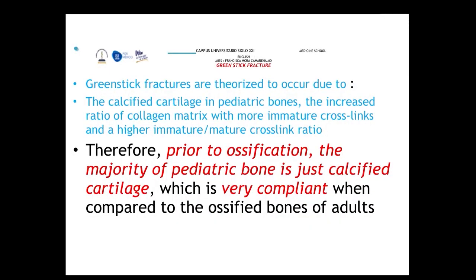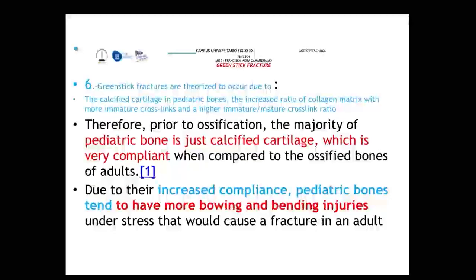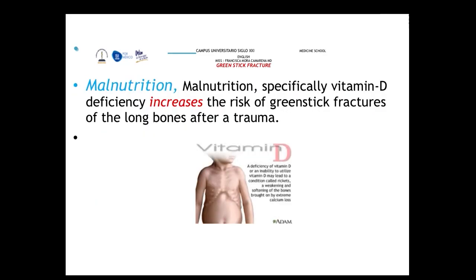Pediatric bones have a higher collagen matrix ratio and a higher immature-to-mature cross-link ratio. Before ossification, most pediatric bones are calcified cartilage, which is very compliant and flexible compared to the ossified bones of adults. Additionally, malnutrition — specifically vitamin D deficiency — increases the risk of greenstick fractures of long bones after trauma because these bones become very weak.